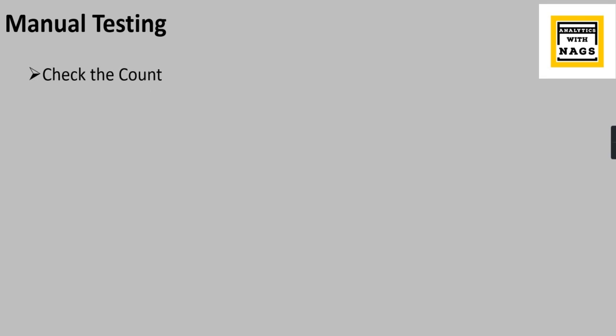This is what is called manual testing — whatever application you develop, people do manual testing. Similarly, once you develop a Power BI report, you have to do manual testing to validate it. So what kind of validations can you make? First, check the count — meaning the number of rows in your source should match the number of rows imported in Power BI. Then check the sum and aggregation, because sometimes the count matches but due to some aggregation involving nullable columns or zero/one values, something may go wrong.